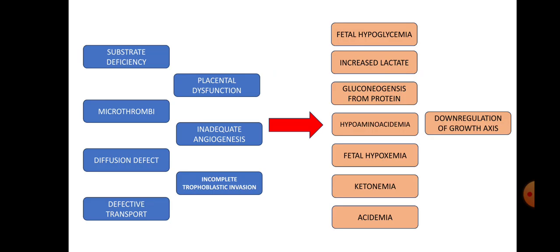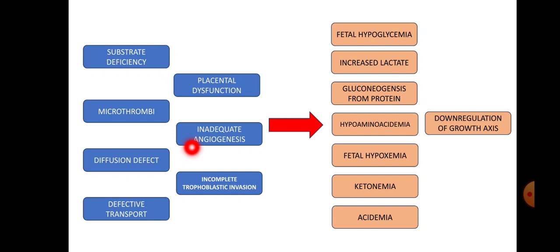All the causes can be summarized as: substrate deficiency — the baby not receiving enough oxygen and nutrients; microthrombi at the placental site impairing diffusion; defective transport; placental dysfunction; inadequate angiogenesis; and most importantly, incomplete trophoblastic invasion, which is the main pathogenesis in preeclampsia.